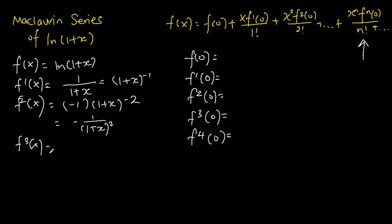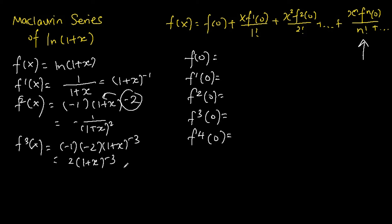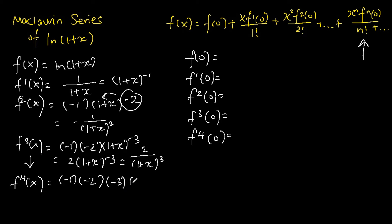Differentiating the function three times, we bring down the power and get negative 1 times negative 2, giving (1+x) to the power of negative 3. This is equivalent to 2 over (1+x) cubed. Differentiating four times we get negative 6 times (1+x) to the power of negative 4, or negative 6 over (1+x) to the power of 4.